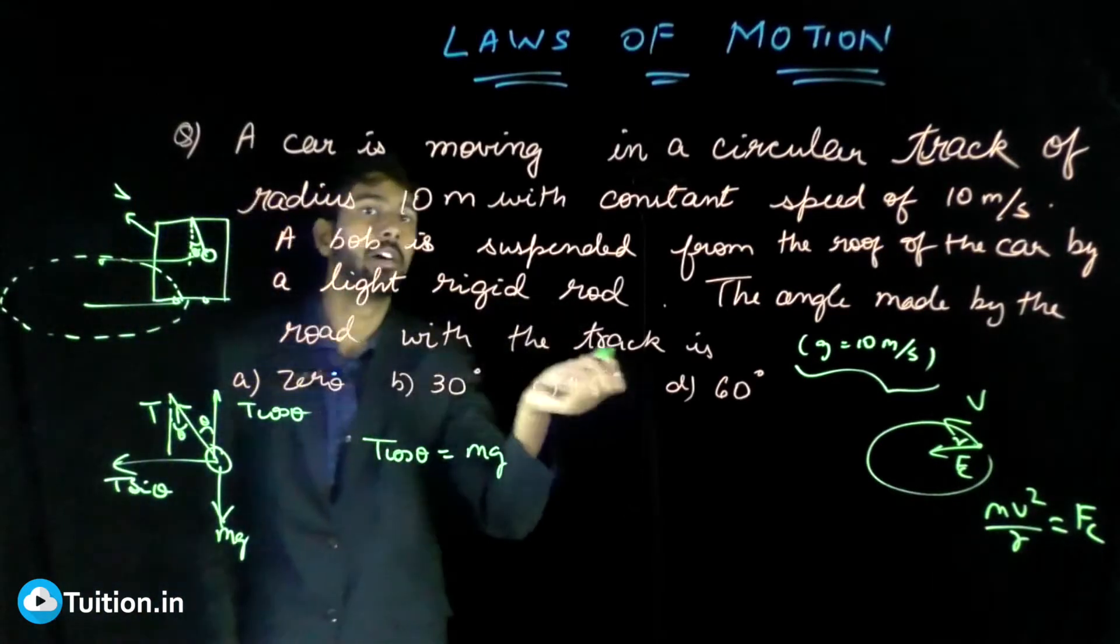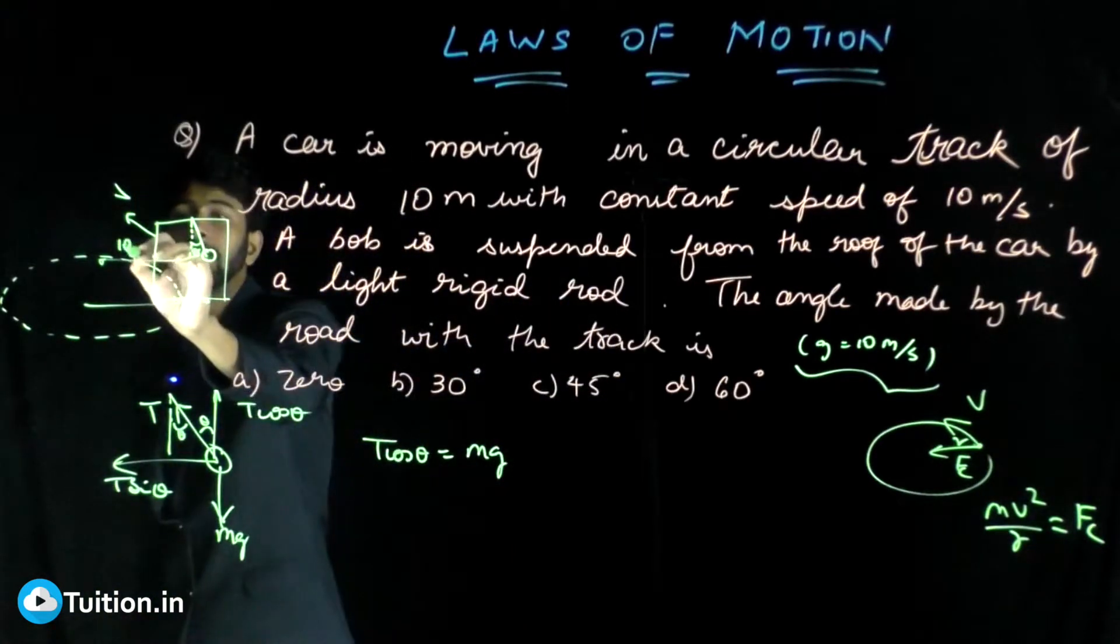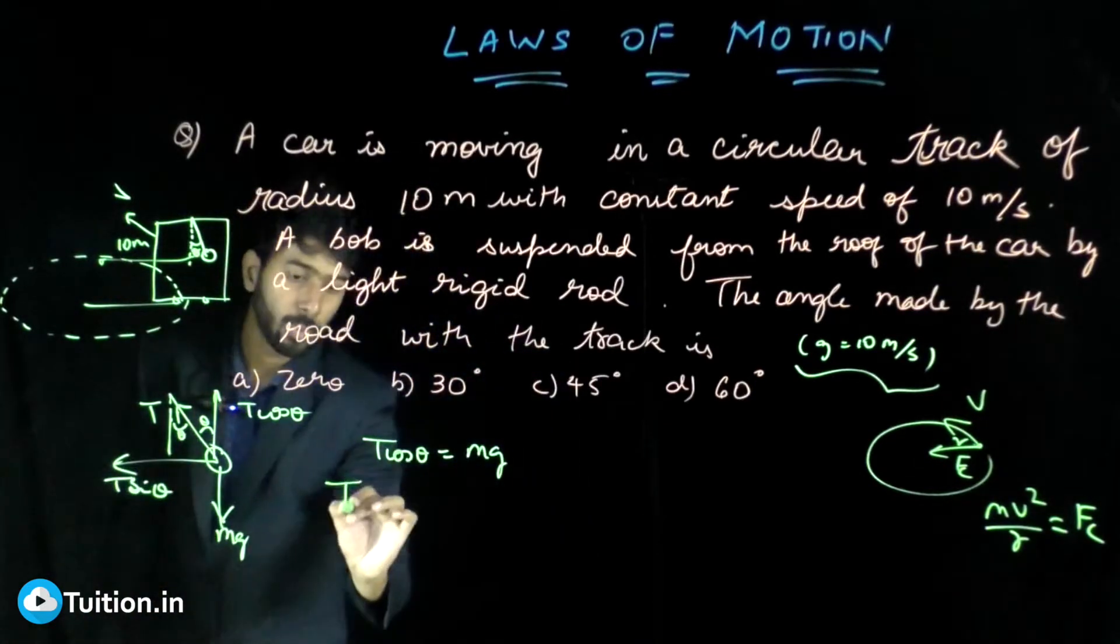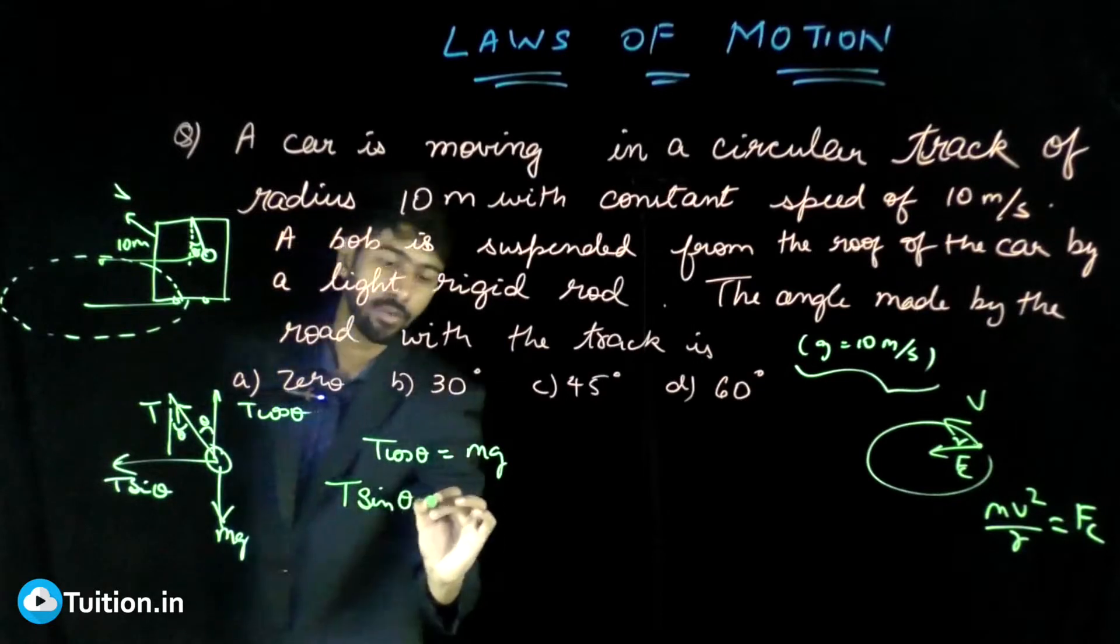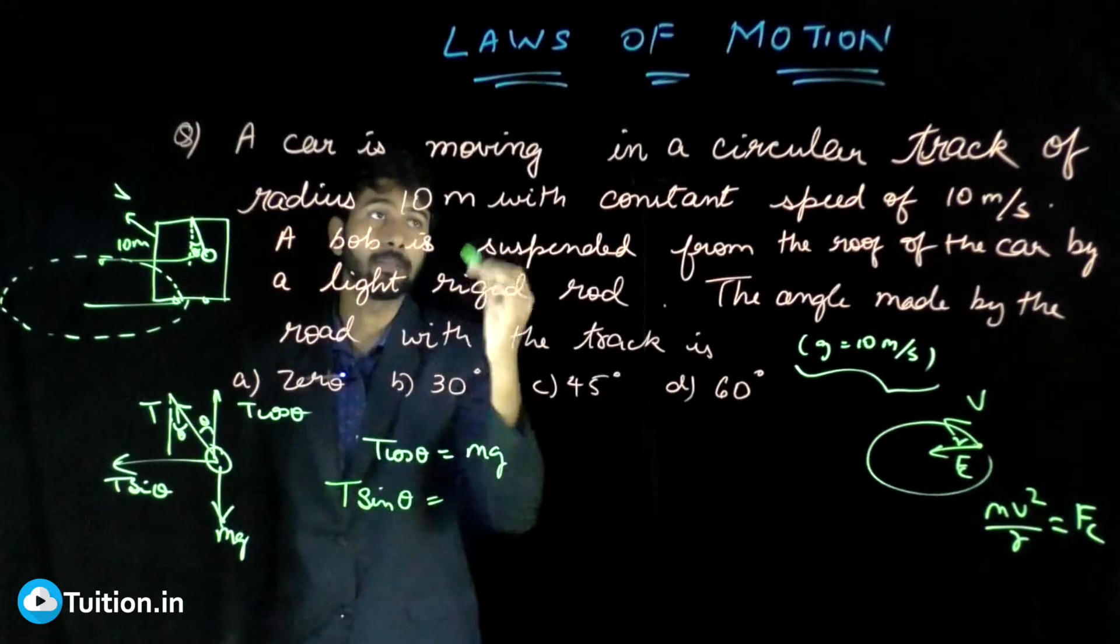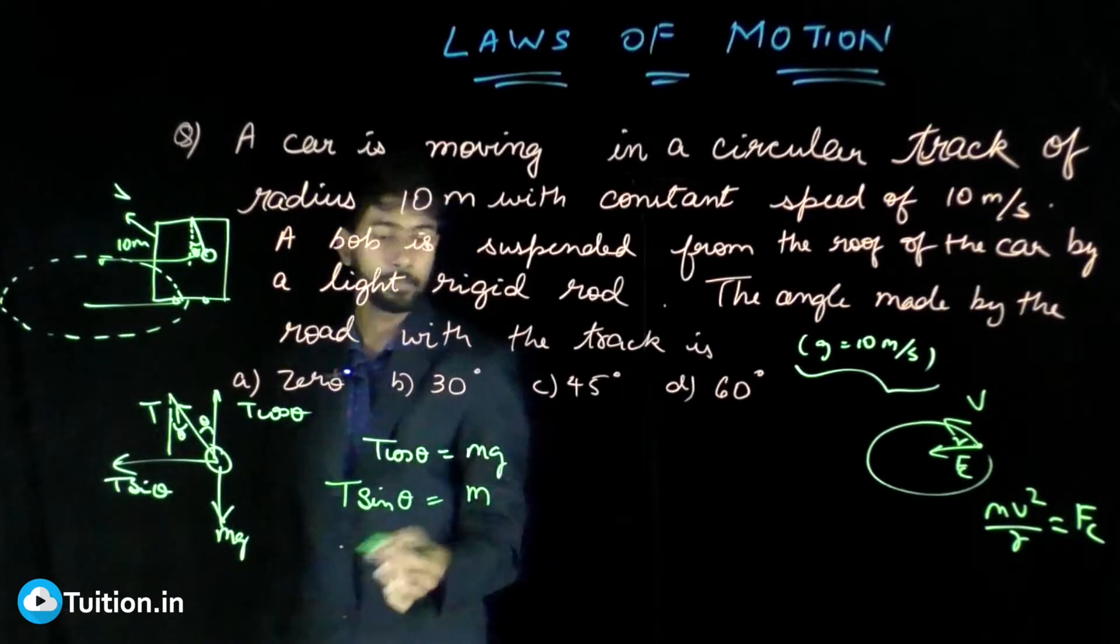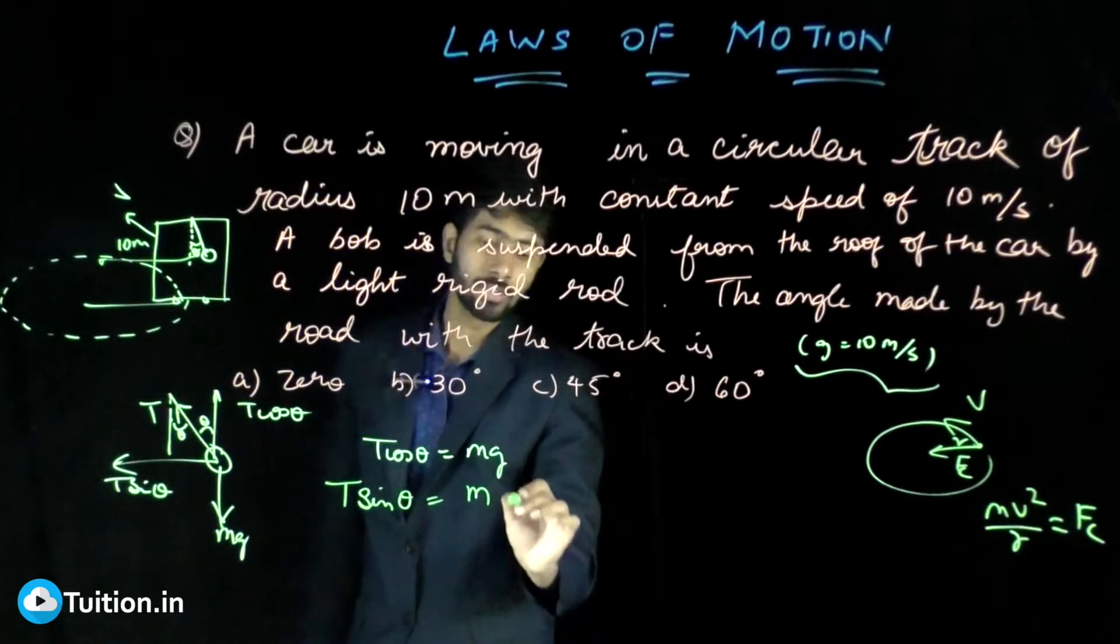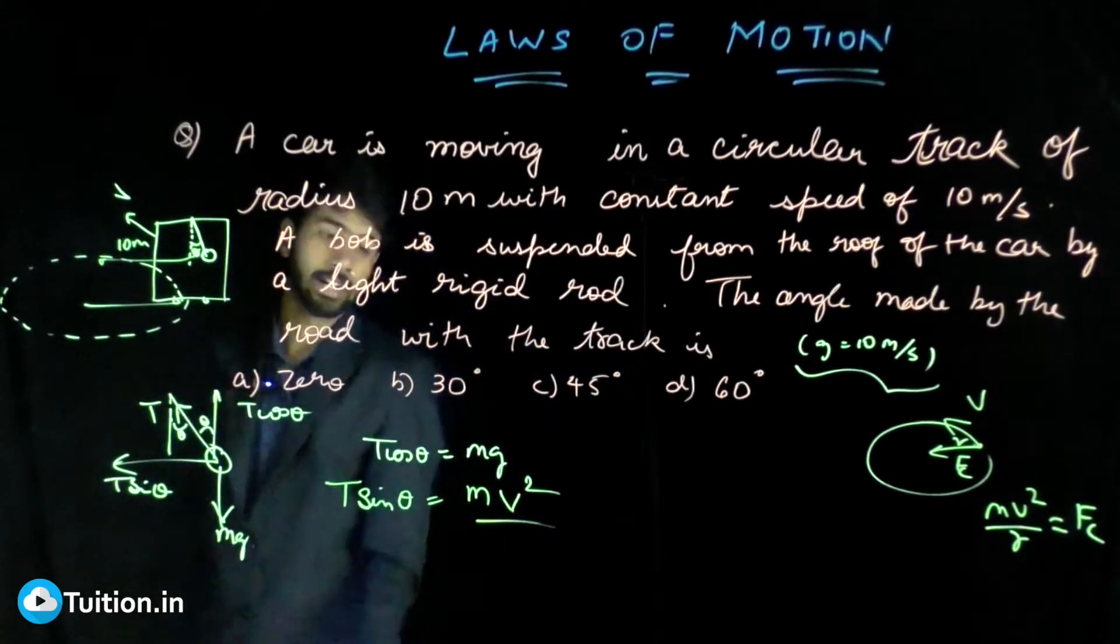It's going at a radius of 10 meters, so this is 10 meters. T sin theta is providing the necessary centripetal force for this bob to be in circular motion. What is the mass of the bob? m. It's moving with V because the car is moving with V, the bob is also moving with V. So V², and r is the radius.